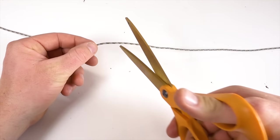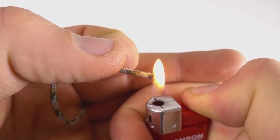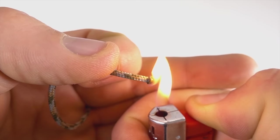I'm going to cut myself a length that's about a foot and a half long and then using a lighter I'll melt the ends down to stop them from fraying.